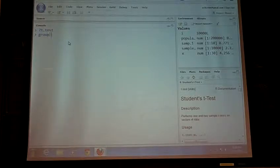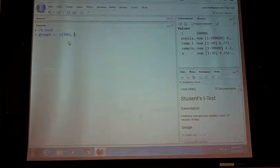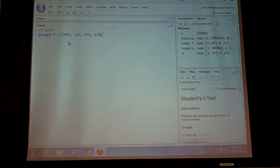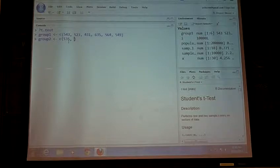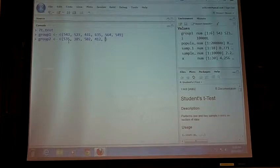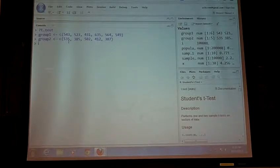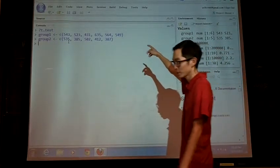So maybe group 1 consists of some values here. So this is the toluene groups in the book. So we've got 543... I'm just punching these numbers in. And then group 2.